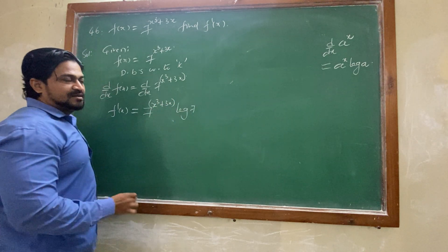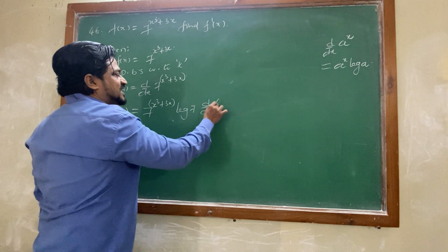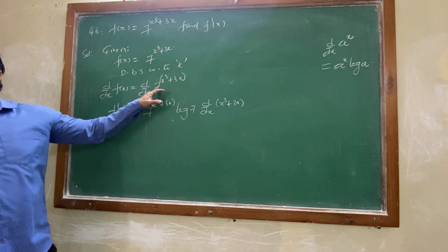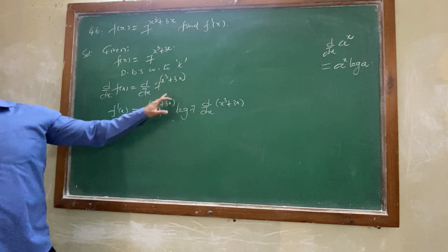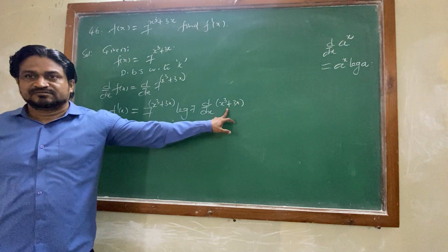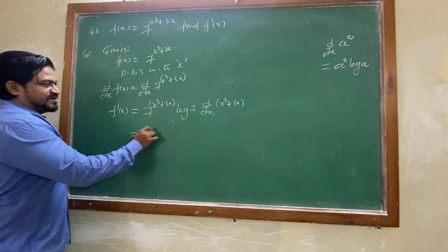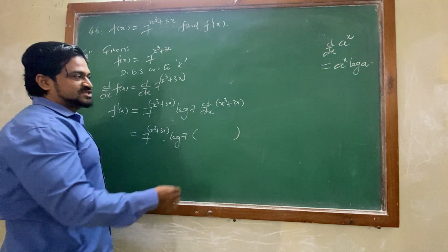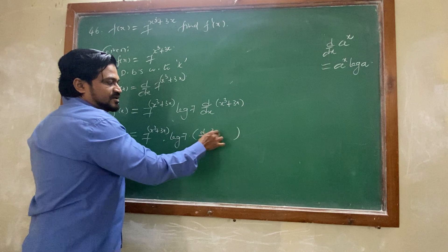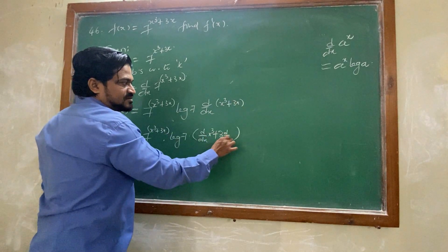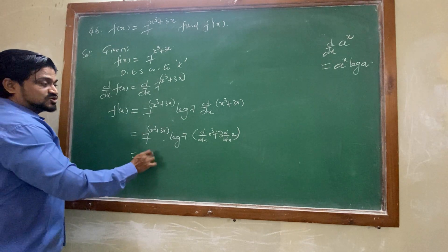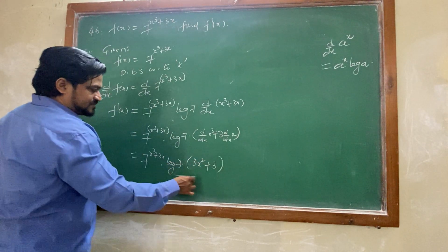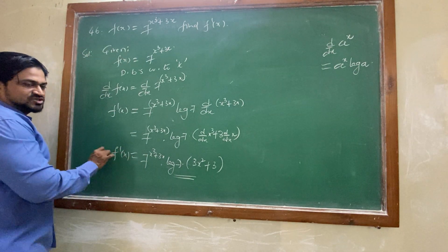This d by dx of f of x becomes f dash of x. Whenever we are removing any d by dx, it becomes dash to this value. Now this value will be considered as x. Anything power x is anything power x log of that thing. A power x log a. But what we treated as x again that should be differentiated. That is treated as inner function, chain rule. 7 power x cube plus 3x. Don't take d by dx of 7. 7 is a number, so number we will not take. Then in bracket, d by dx is given to both the values. 3 is taken out. Log 7 into 3 into x square, 3 into 1. So this is the value for f dash of x.